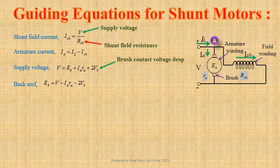The expression for back EMF is EB equals phi·Z·N·P divided by 60A, where phi is the useful flux per pole, Z is the number of armature conductors, N is the speed of the motor in revolutions per minute, P is the number of poles, and A is the number of parallel paths of the armature winding. Since Z, P and A are fixed for a particular machine, we get EB equals K·phi·N.